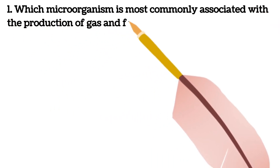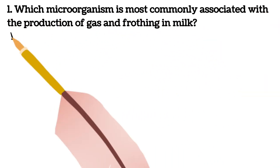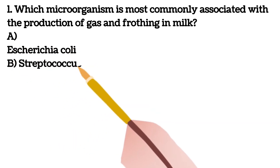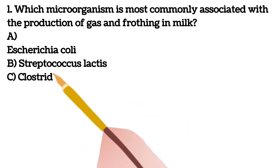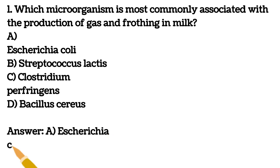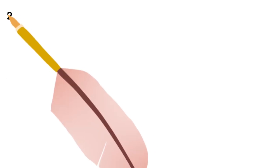Which microorganism is most commonly associated with the production of gas and frothing in milk? A. E. coli B. Streptococcus lactis C. Clostridium perfringens D. Bacillus cereus. Your answer is A, E. coli.